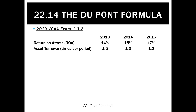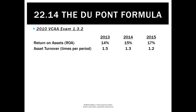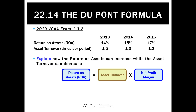The reason we need to know this is that while it's not listed in the study design, we could still get exam questions requiring it. Looking at a question from the 2010 exam, we were given return on assets and asset turnover for three years, then asked to explain how return on assets can increase but asset turnover decreased. The easiest way to answer this is to understand the DuPont formula: return on assets must equal asset turnover multiplied by net profit margin.